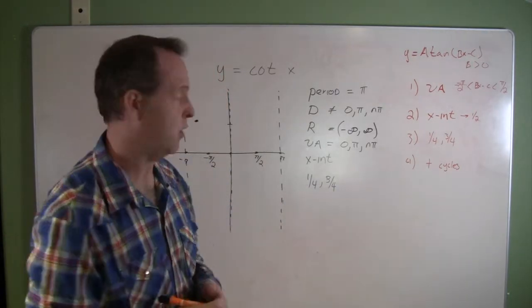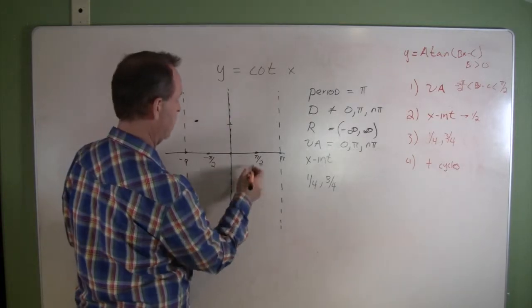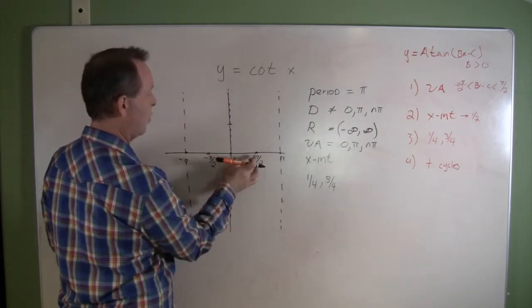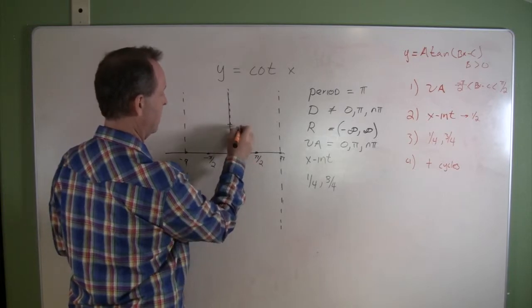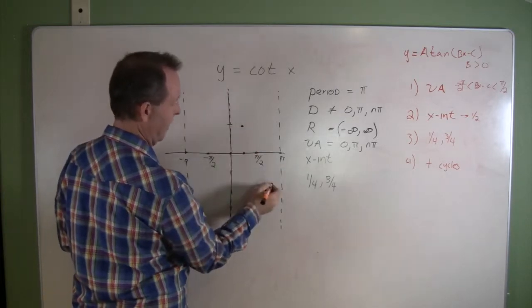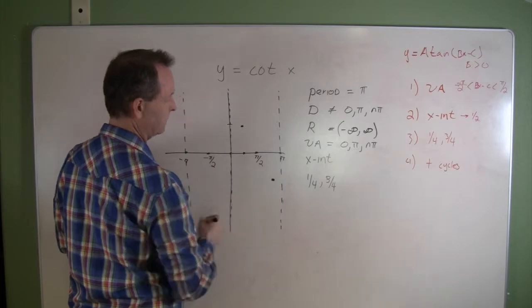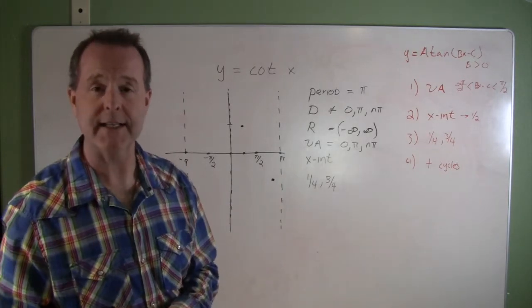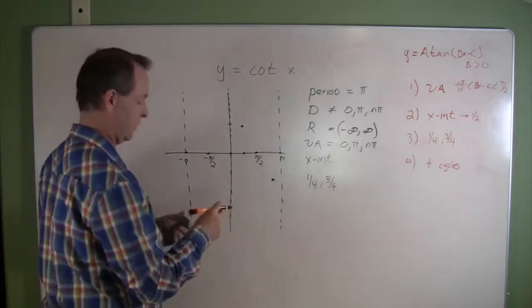And then three-quarters of the way, it's going to be the negative value of its amplitude, so down here at negative 1. So a quarter of the way is 1, three-quarters of the way is negative 1. Now I've found the key points and vertical asymptotes where I can go ahead and create this graph.